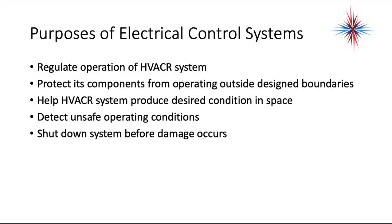Let's talk about the purpose of electrical control systems. Electrical control systems regulate and operate an HVAC system. They protect components from operating outside design boundaries, and they help HVAC systems produce desired conditions in a space. They're designed to detect unsafe operating conditions and shut down the system before permanent damage occurs.